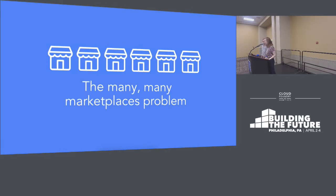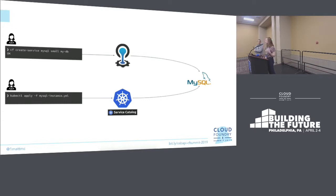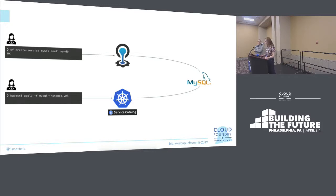So I'm going to dig a little into the many, many marketplaces problem. If you're going to create a service instance in Cloud Foundry or in Kubernetes, the user experience is actually pretty simple. In Cloud Foundry, you use CF create-service — you give it the service name, the plan name, and then you give your service instance a name, and the platform talks to the broker and your service instance is spun up. There's a pretty similar experience in Kubernetes if you have the service catalog project installed, where you just kubectl apply and give it the manifest file.